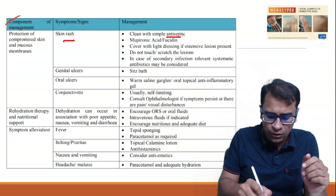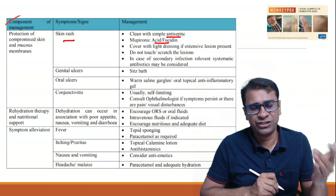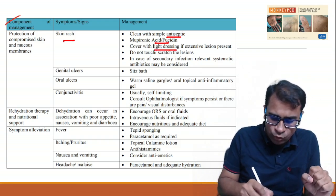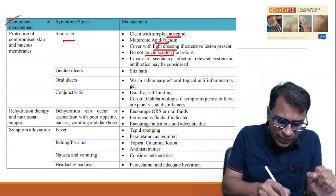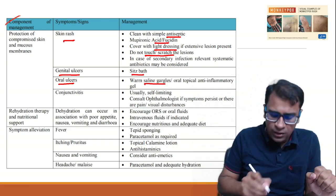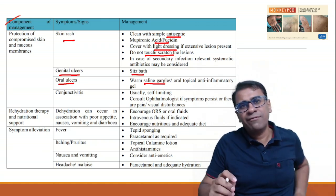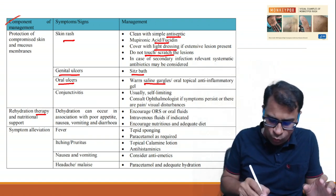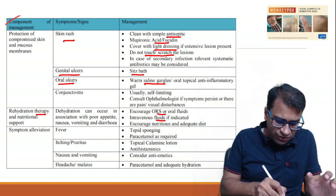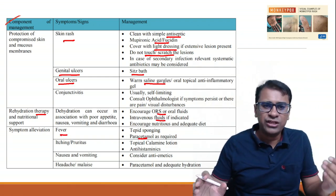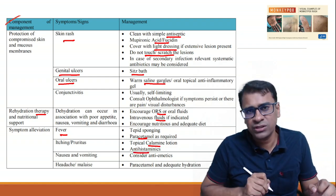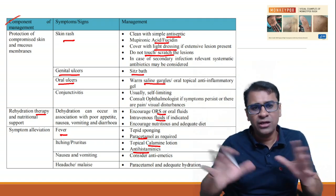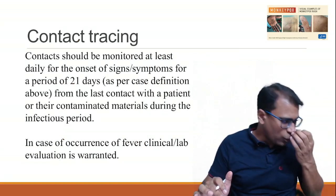For basic rash management, apply a simple antiseptic or mupirocin antibiotic to prevent secondary infections. Light dressing can be done but do not touch or scratch lesions. For oral ulcers, warm saline gargles can be done; for conjunctivitis, antibiotic eye drops can be given. If a patient requires hydration, give oral rehydration solution or IV fluids with nutrition support. For fever, give paracetamol only. For itching, give topical antihistamines and calamine lotion. Anti-emetics can also be given for nausea and vomiting.